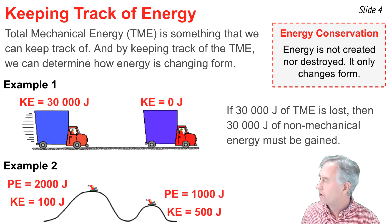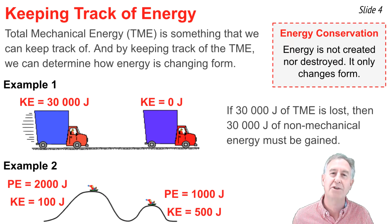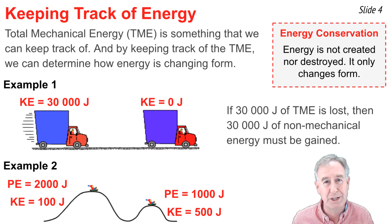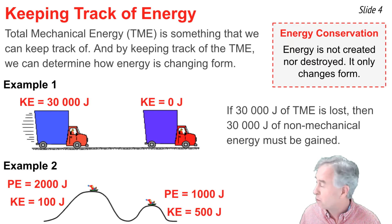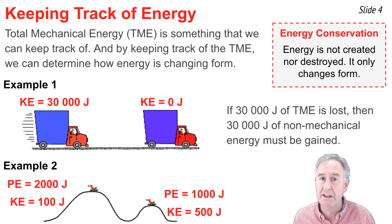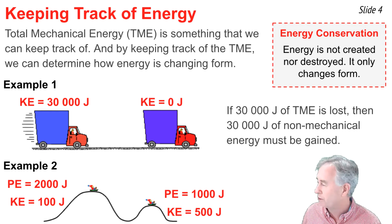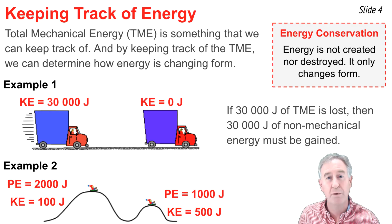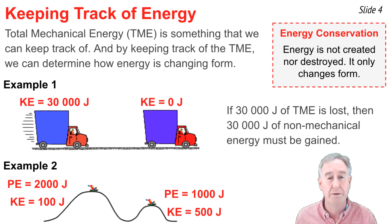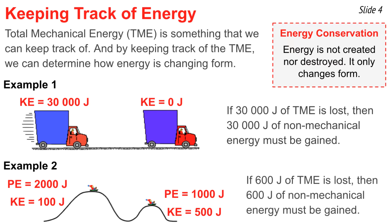As a second example, consider a letter on top of a tall hill. It has 2,000 joules of potential energy and 100 joules of kinetic energy, for a total of 2,100 joules of mechanical energy. It travels into the valley and up onto a second, shorter hill, where it has 1,000 joules of potential energy and 500 joules of kinetic energy, for a total of 1,500 joules. In the process, the letter has lost 600 joules of total mechanical energy.